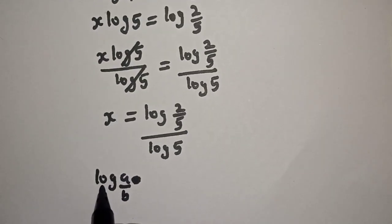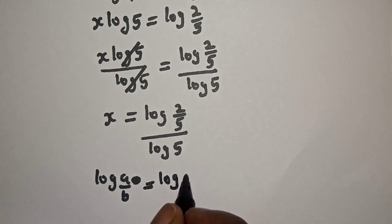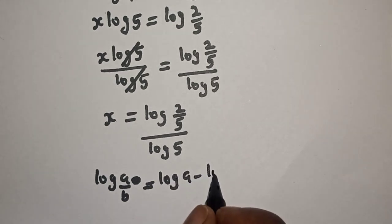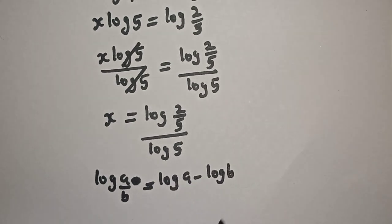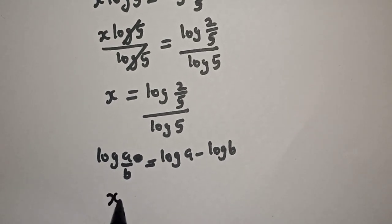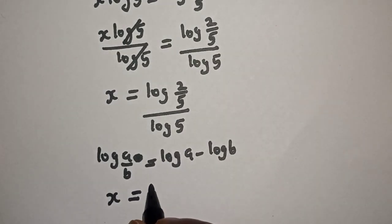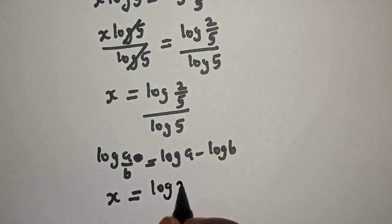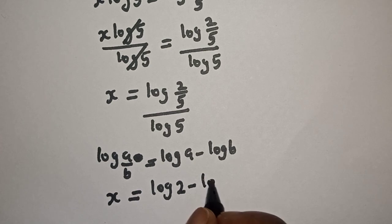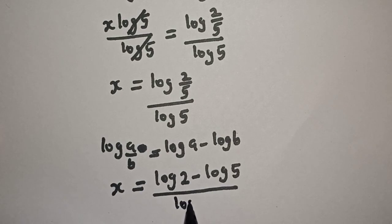Remember this rule: if you have log a over b, this is equal to log a minus log b. Then we have s is equal to log 2 over 5, which can be written as log 2 minus log 5, over log 5.